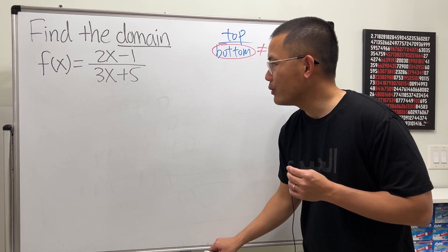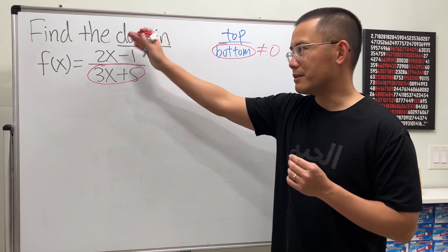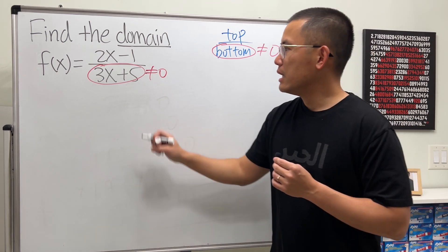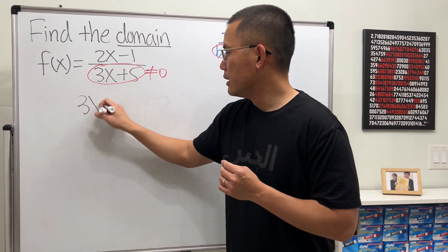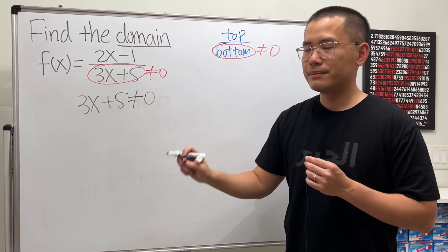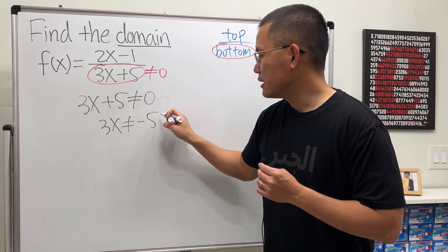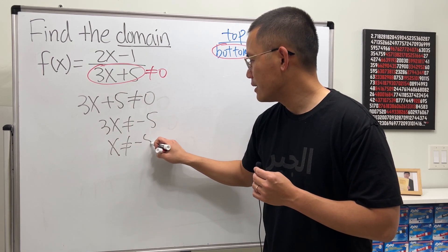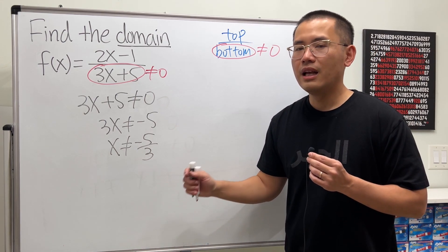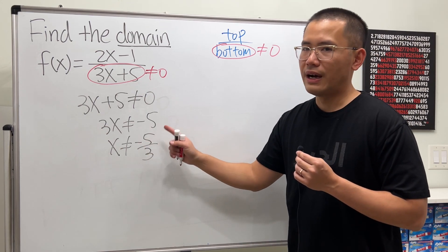We just look at the bottom — the top can be 0, that's okay. The bottom cannot be equal to 0. So all we have to do is set 3x plus 5 not equal to 0 and solve for x. Subtract 5 from both sides, divide both sides by 3. Done. Here we are saying x can be any real number except for negative 5 over 3.